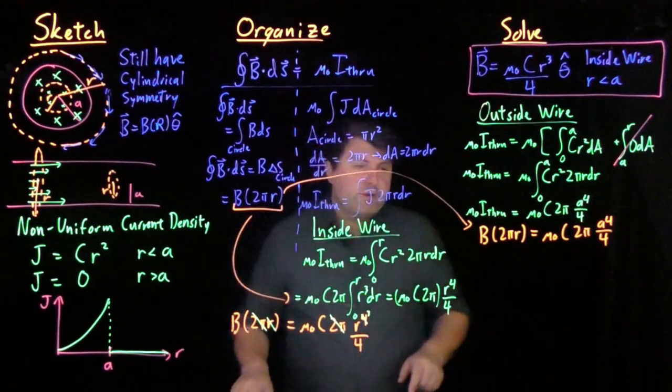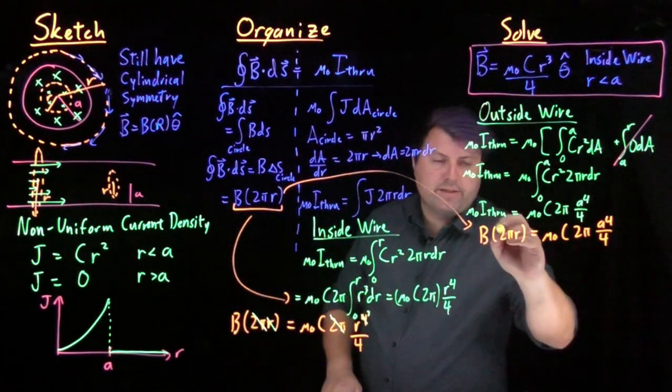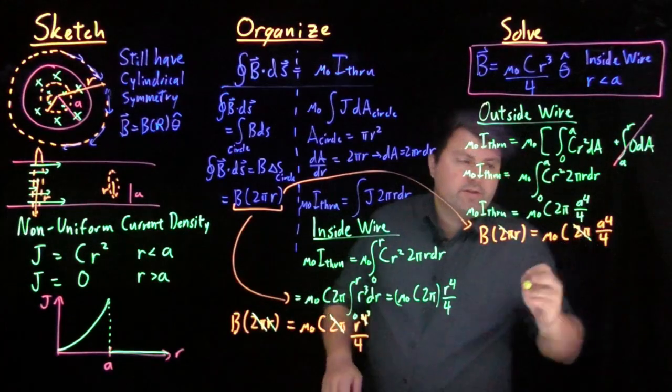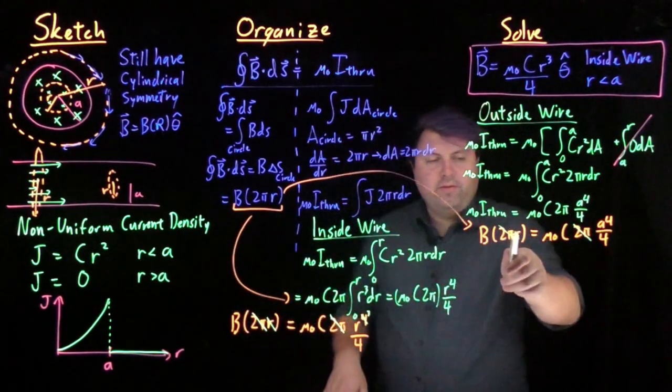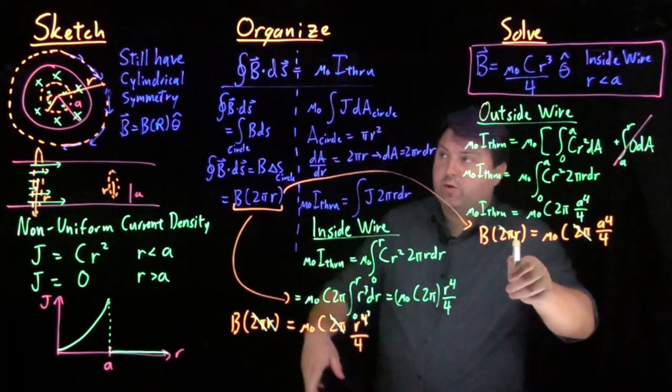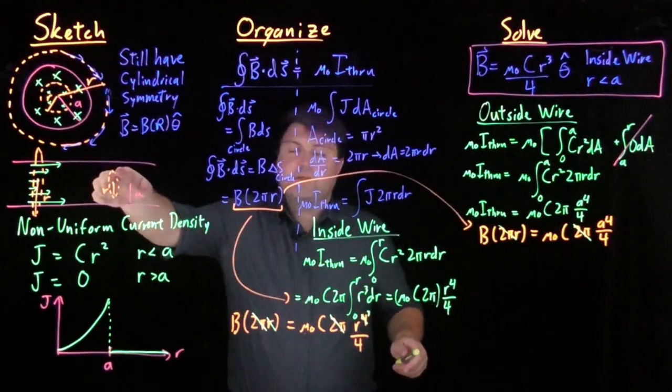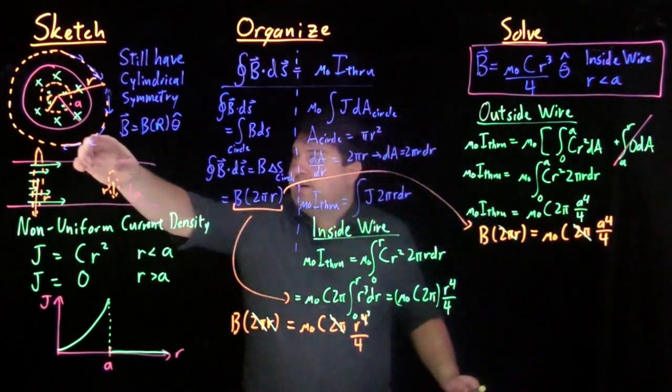So we still can cancel, but not as excitedly as we were last time. So the 2 pi's still cancel, but now this r is a variable. As we increase our Amperian loop, this r increases. But this a is a constant. As we increase this Amperian loop, the limit of the wire stays the same.